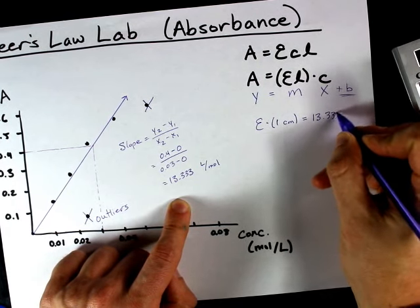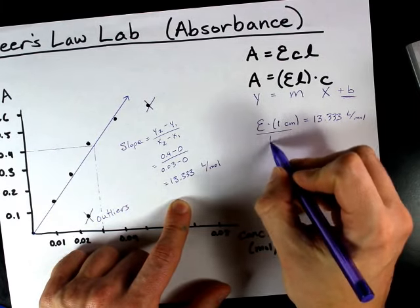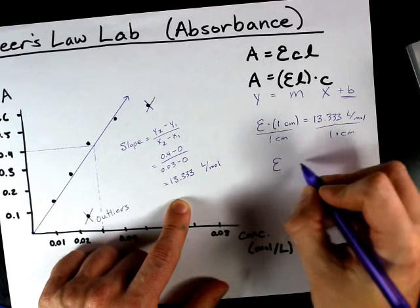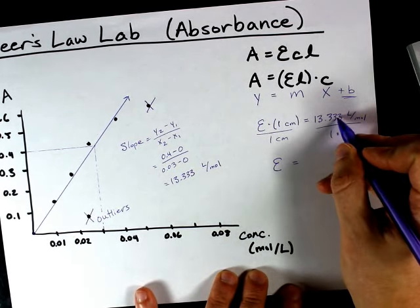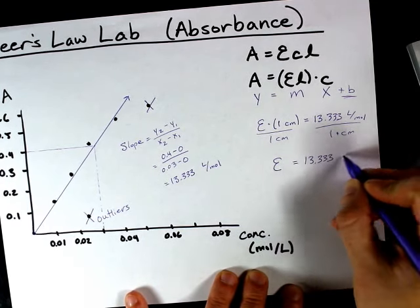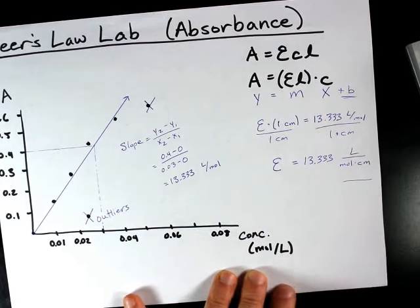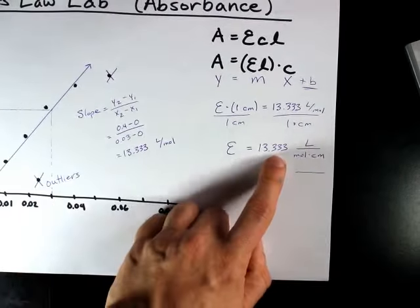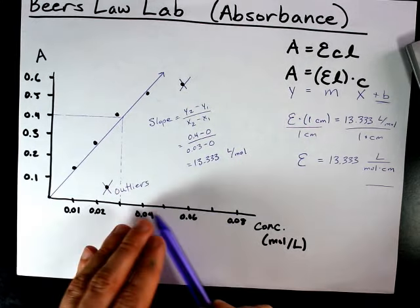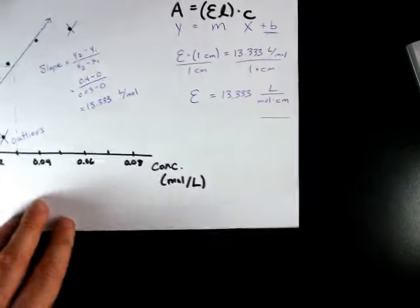That's 13.333 liters per mole. Divide out the one centimeter. And I've calculated my molar absorptivity to be 13.333 divided by 1 is 13.333 liters per mole centimeters. Weird unit that you've probably never seen before, but it will help the units cancel out. The higher this number, the more absorbent the compound you used was to the wavelength you chose.